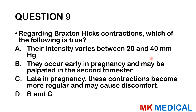Question nine: Regarding Braxton-Hicks contractions, which of the following is true? A, their intensity varies between 20 and 40 mmHg; B, they occur early in pregnancy and may be palpated in the second trimester; C, late in pregnancy these contractions become more regular and may cause discomfort; D, both B and C. These are known as practice contractions. They are seen early in pregnancy, can be palpated in the second trimester, and their frequency increases in later trimesters. Both B and C are correct.